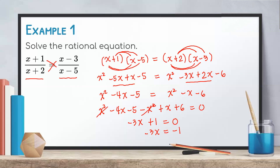Then divide both sides by negative 3. So negative 3 divided by negative 3 equals 1. Hence, x equals negative 1 over negative 3, which becomes positive one-third.